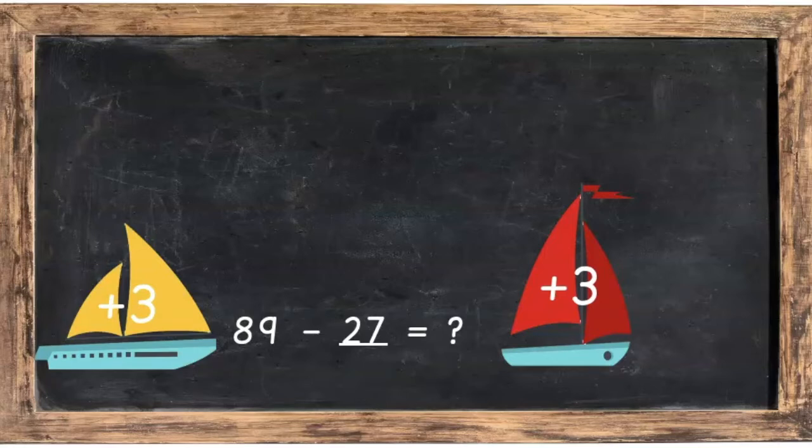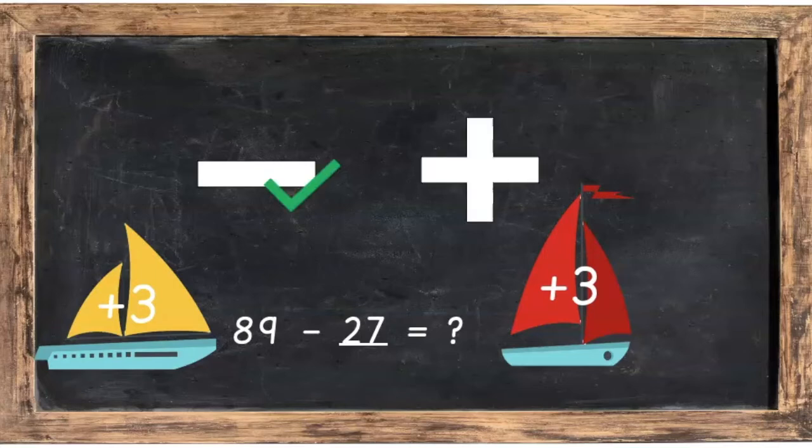So make the 89 bigger by 3, too. Remember this only works for subtraction and it doesn't work for addition.